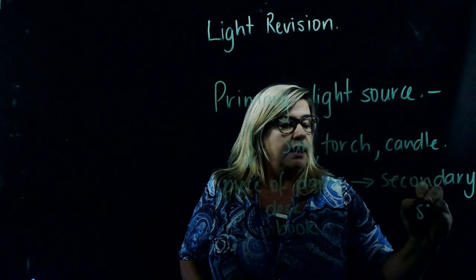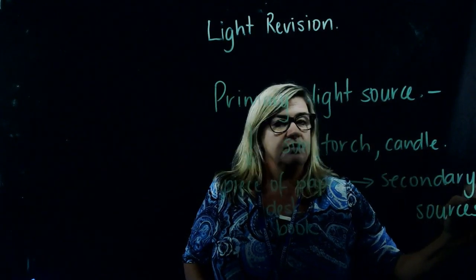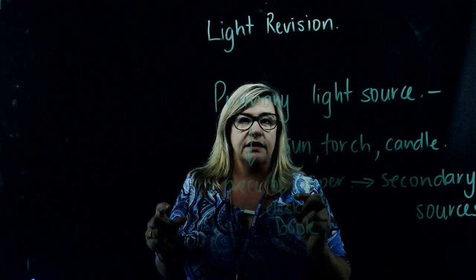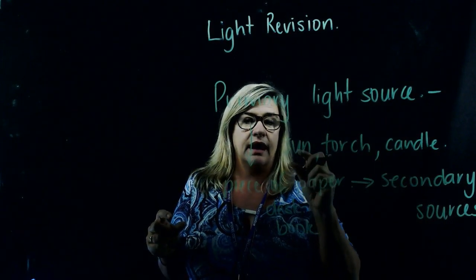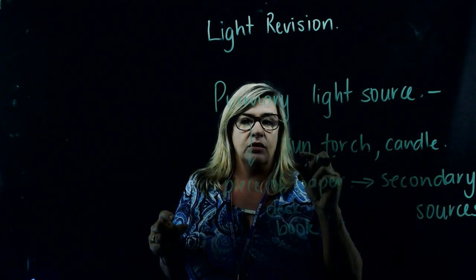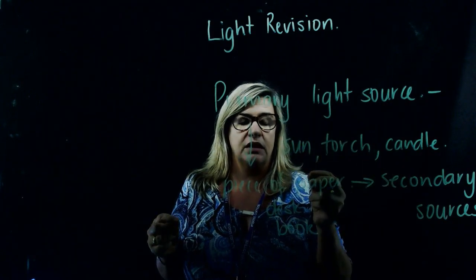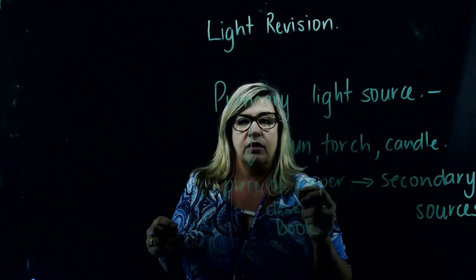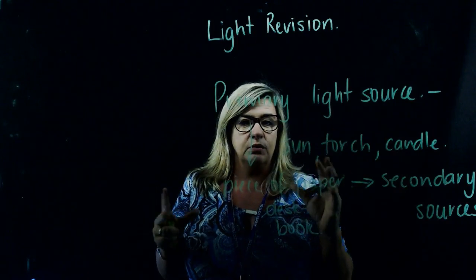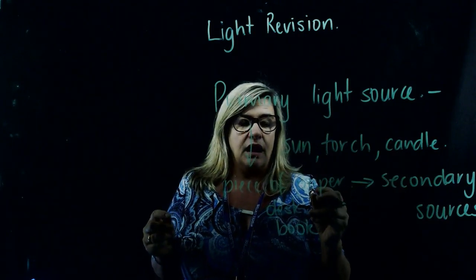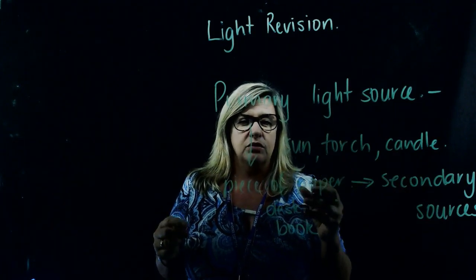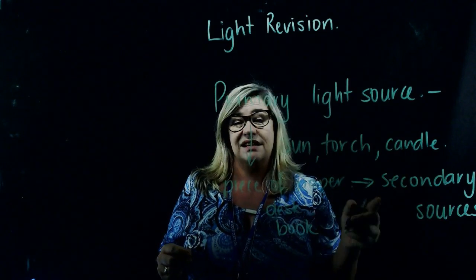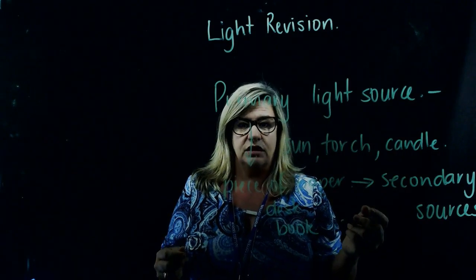You would remember the experiment we did with our peak boxes — we could see the character in the box, but only when the primary light source, the torch, was shined into the box. When it was complete darkness, we tried to see it but we couldn't. So we need a primary light source to see any secondary light sources.